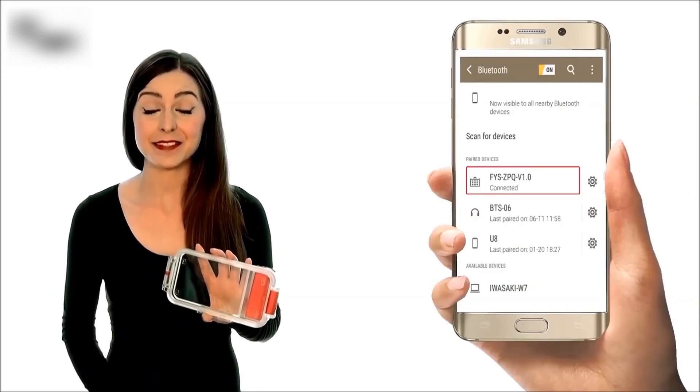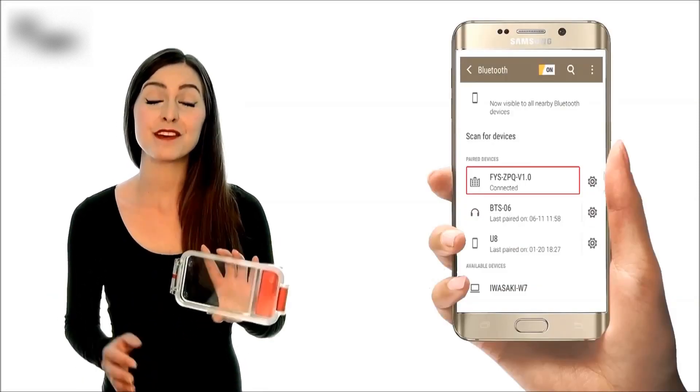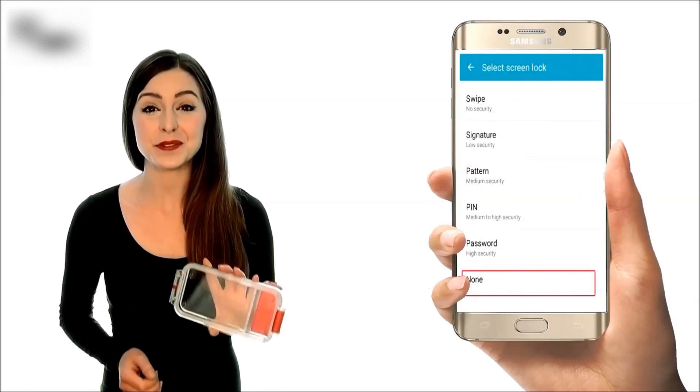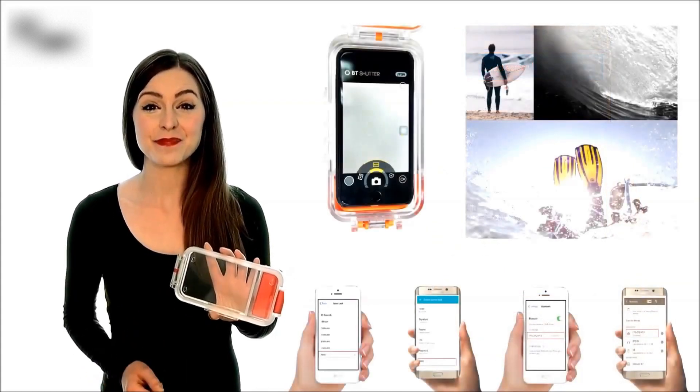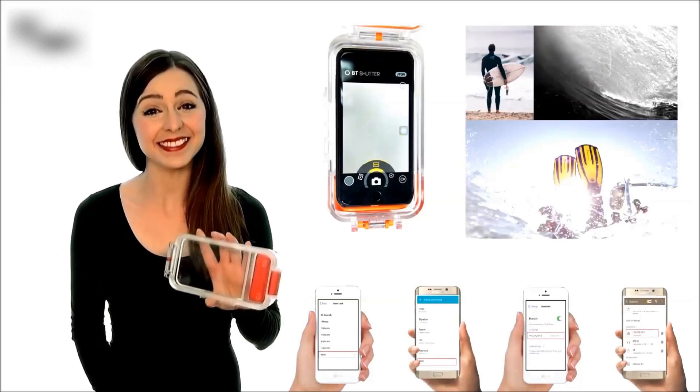Three, find the device and connect your smartphone. Four, disable the screen lock feature on your phone settings. Five, open the BT Shutter app and start shooting.